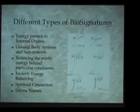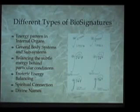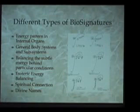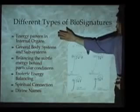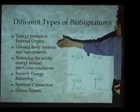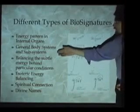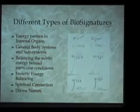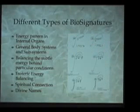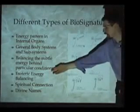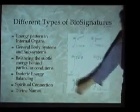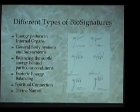In working with biosignatures, we give students hundreds of biosignatures to work with at Level 3. There are many different types: energy patterns related to internal organs, patterns related to general body systems and subsystems, patterns that balance the subtle energy behind particular conditions or ailments, patterns related to esoteric energy balancing, spiritual connection, and even patterns related to the divine names understood in the esoteric systems of the Middle East.